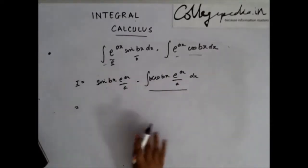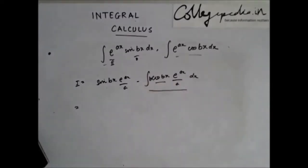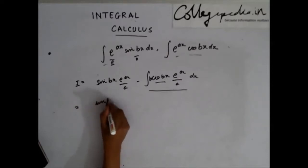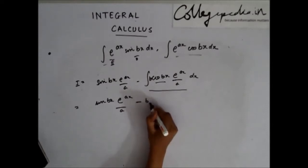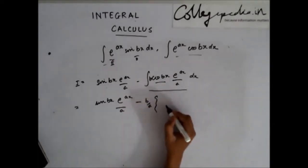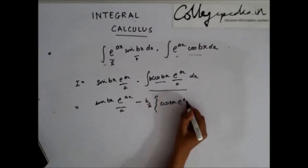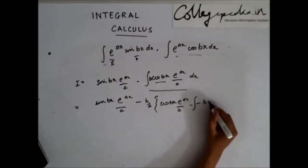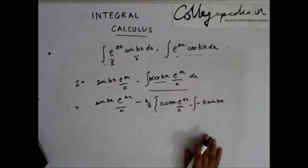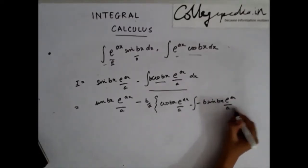For the remaining integral, cos(bx) is my first function and e^(ax) is my second function by the I-LATE principle. So I can write this as sin(bx)·e^(ax)/a minus b/a, and solving that part gives cos(bx)·e^(ax)/a minus sin(bx)·e^(ax)/a dx.